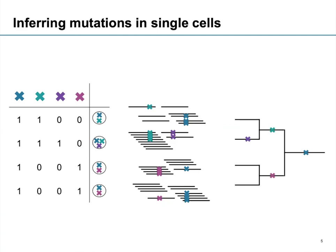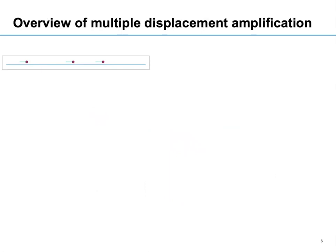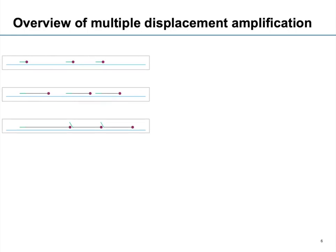This is what we set out to do. The problem is that we look at single cells, so we have very, very little material to start with. This needs to be amplified, which is usually done with multiple displacement amplification. We have some hexamers and polymerases that make a copy of the DNA. Whenever these polymerases encounter an already-copied sequence, they just displace it — hence multiple displacement amplification. These new stretches can then serve as a new template, and if we do this over and over again, we get lots of material to sequence. However, some stretches are amplified very much and others almost not at all.